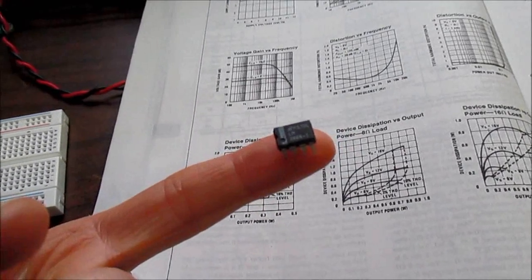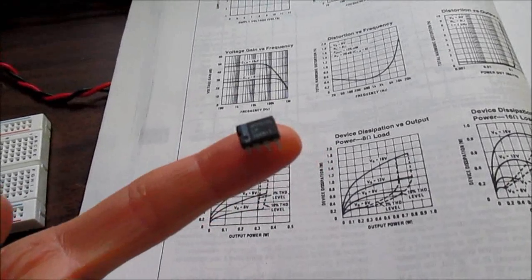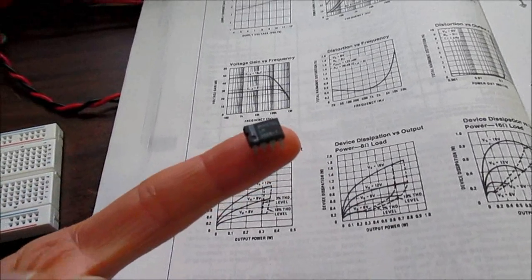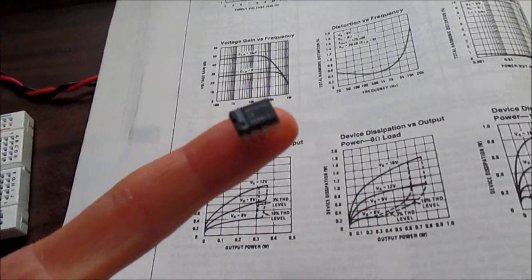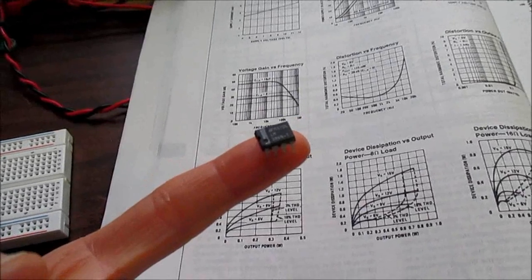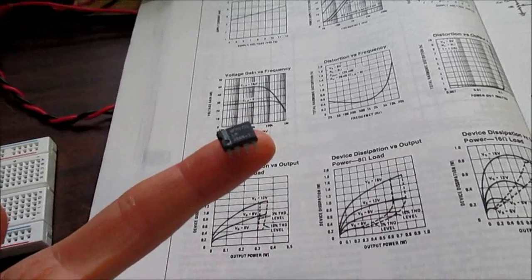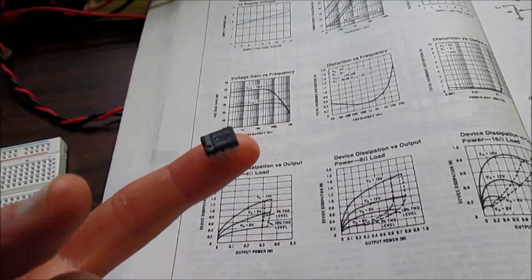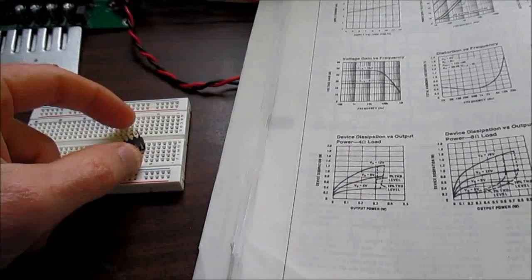Going to do some power measurements, talk about layout issues. A lot of people build these things and they pop and buzz and they get distortion. And it's really not a problem with the chip, it's the layout of the circuit. You really have to do it right, and we'll experiment with that. Like I say, we'll do power measurements and all that.